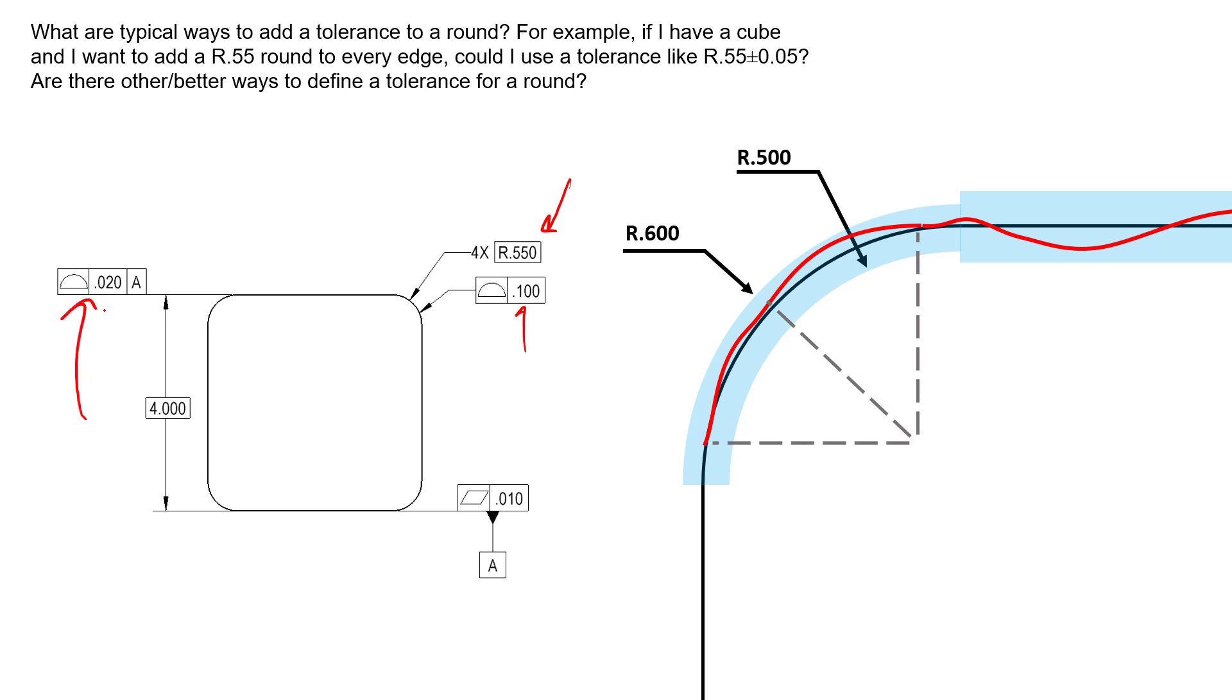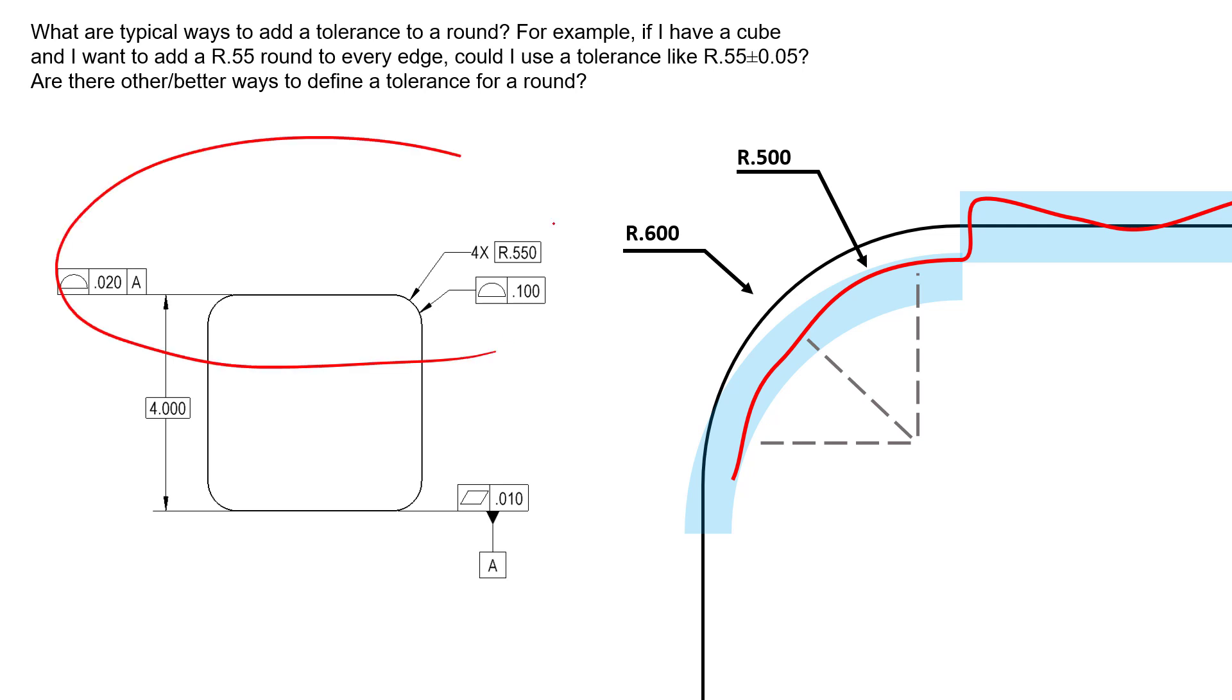We also see here the profile of a surface callout controlling this right here. And that brings up an interesting topic. This profile of a surface is not controlled in location, whereas this one is. So if we're controlling where this surface can go, it's got to be inside this tolerance zone here. But what's interesting about this feature control frame is there's no datum involved. So that tolerance zone can move and shift and rotate wherever it wants. The only requirement is the elements of that radius have to fit inside that zone so we can shift it down here. This scenario allows a rather large step in this area.